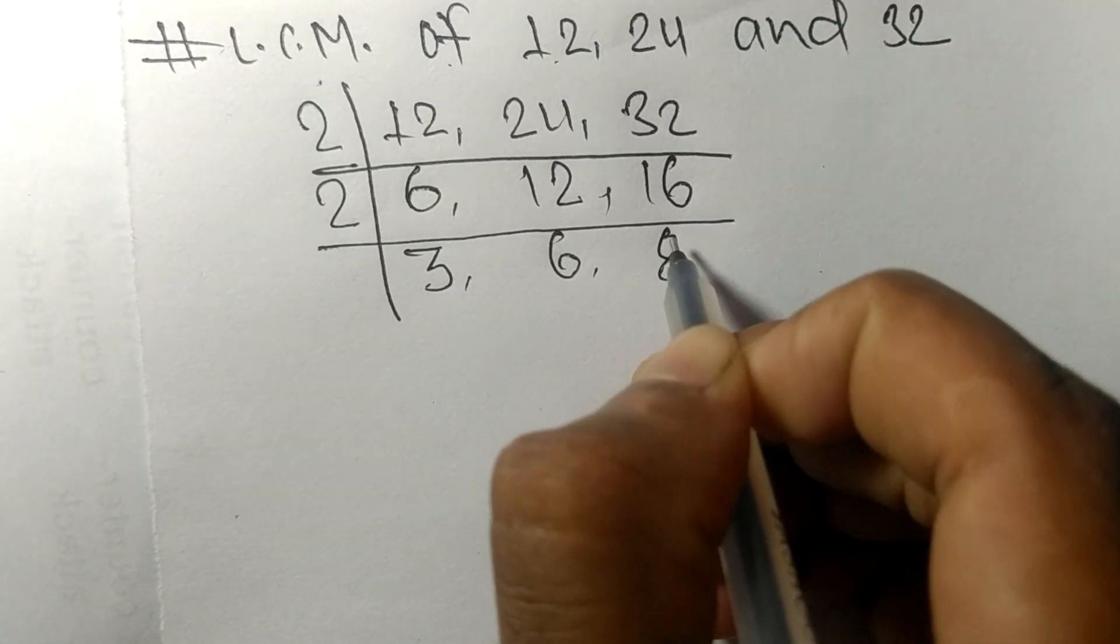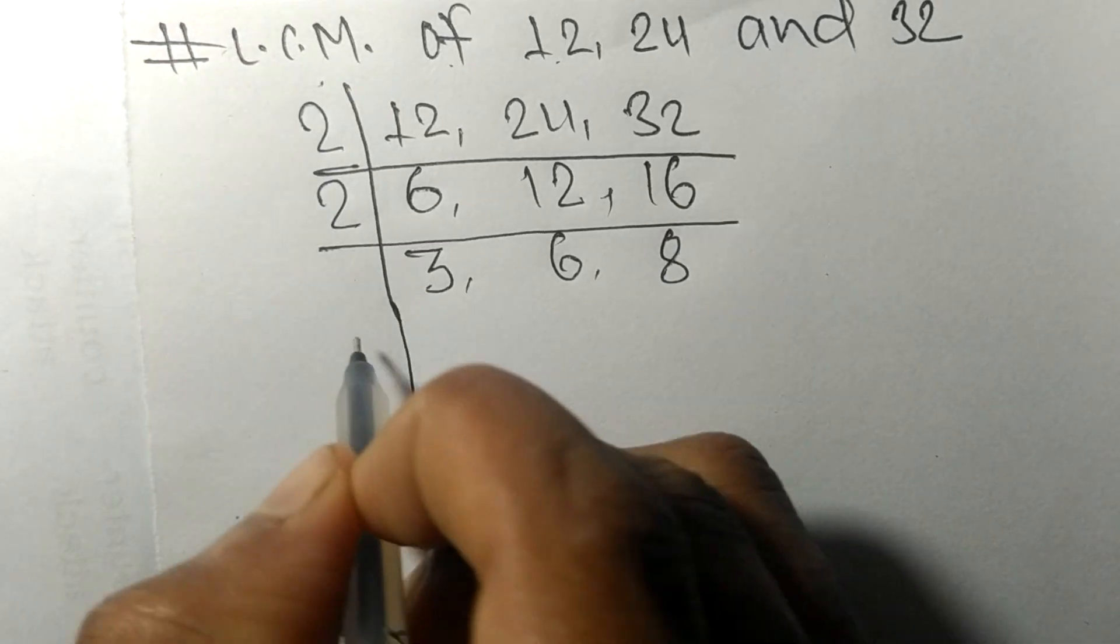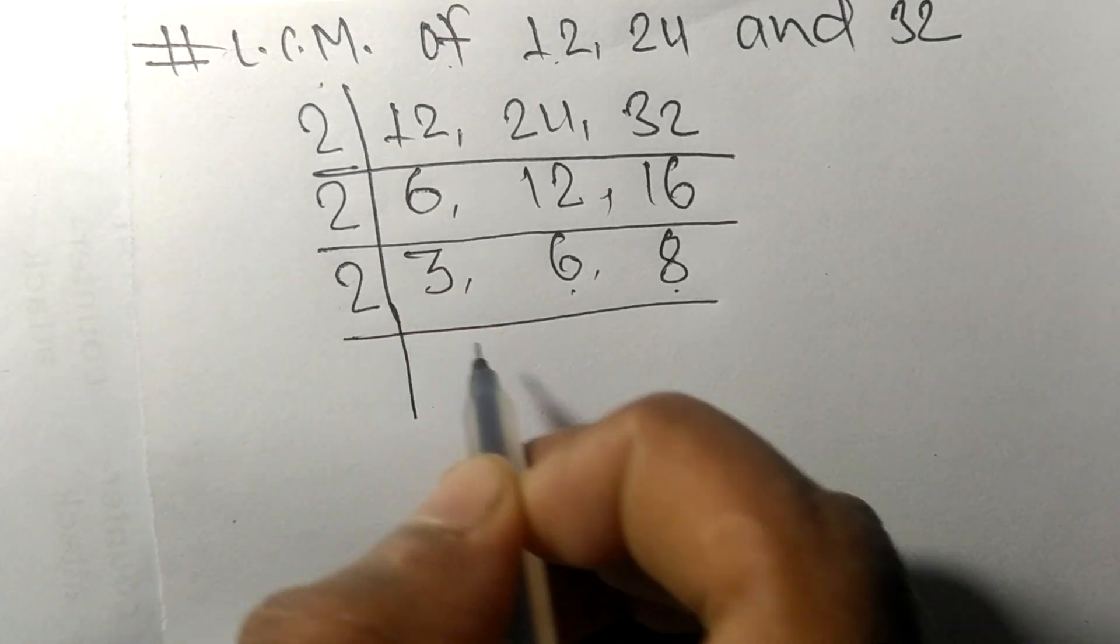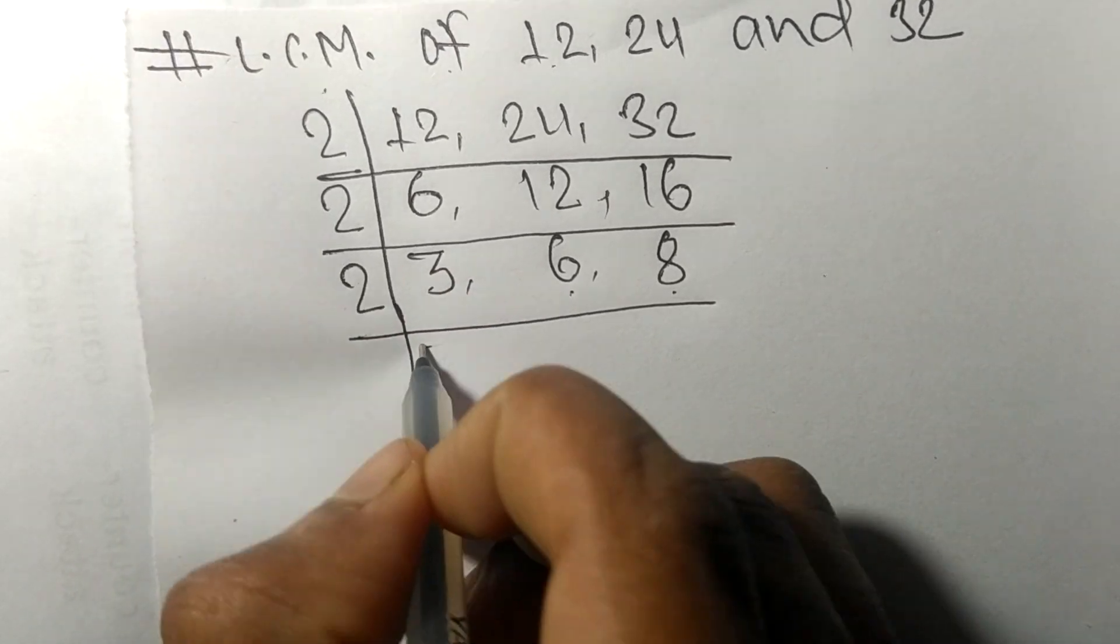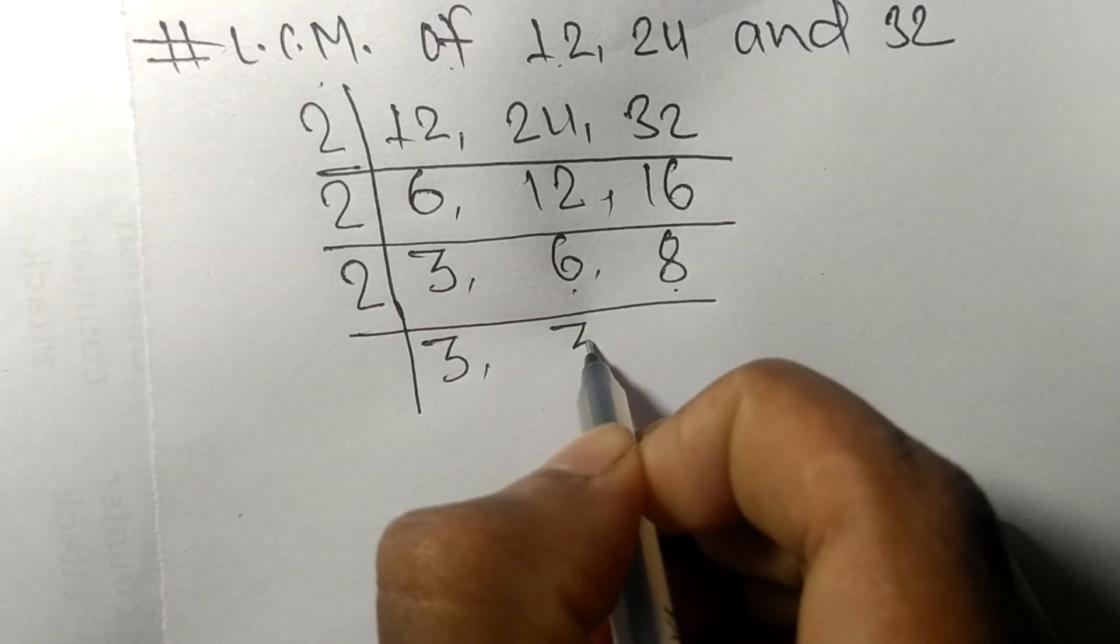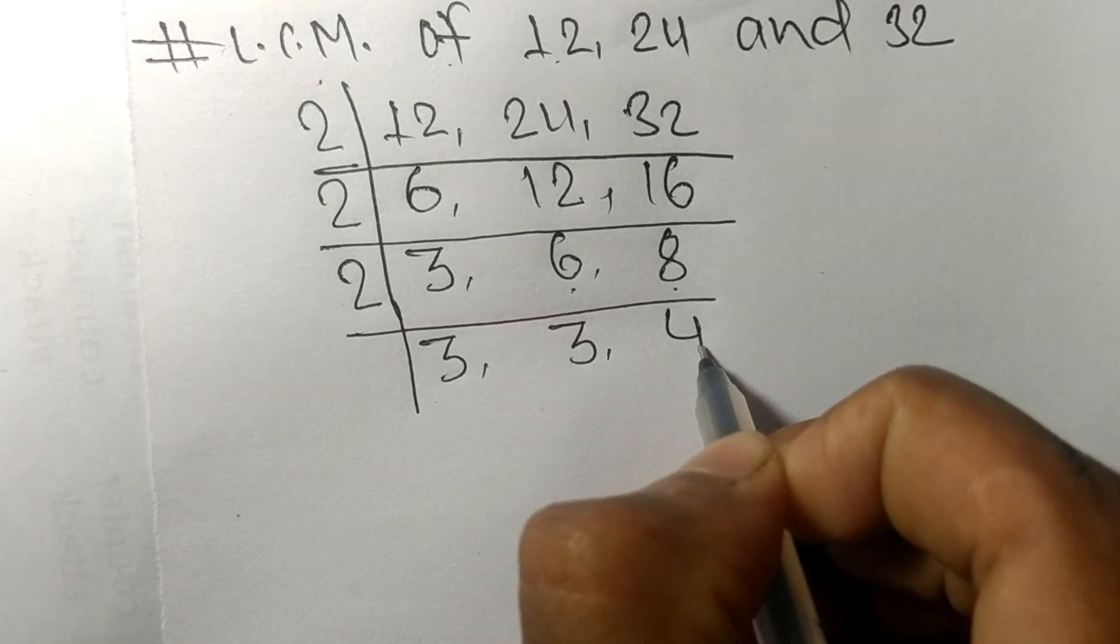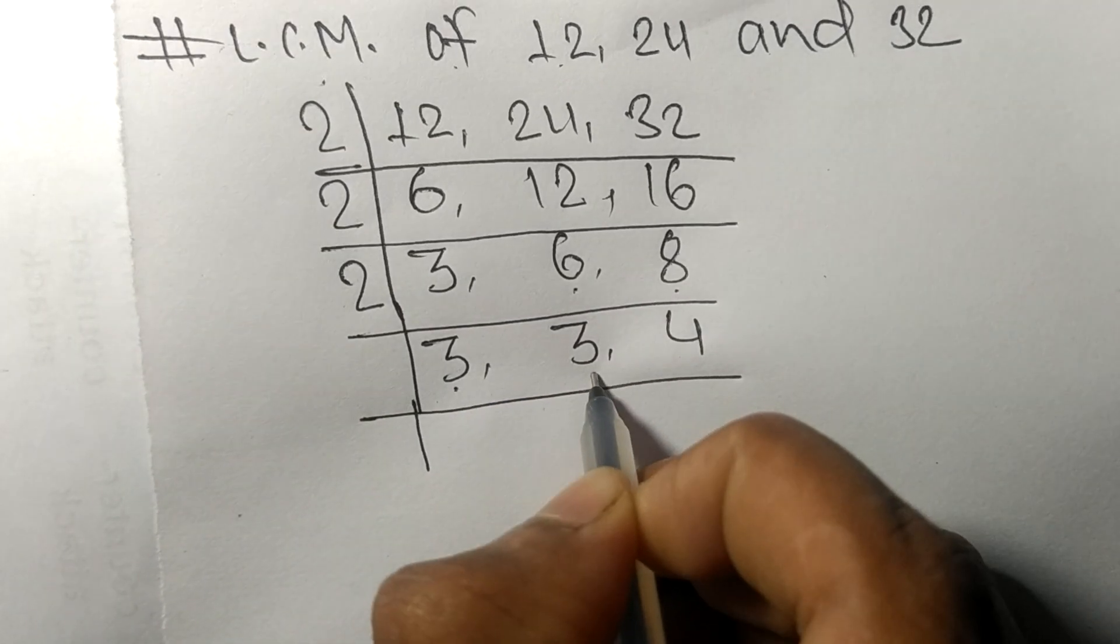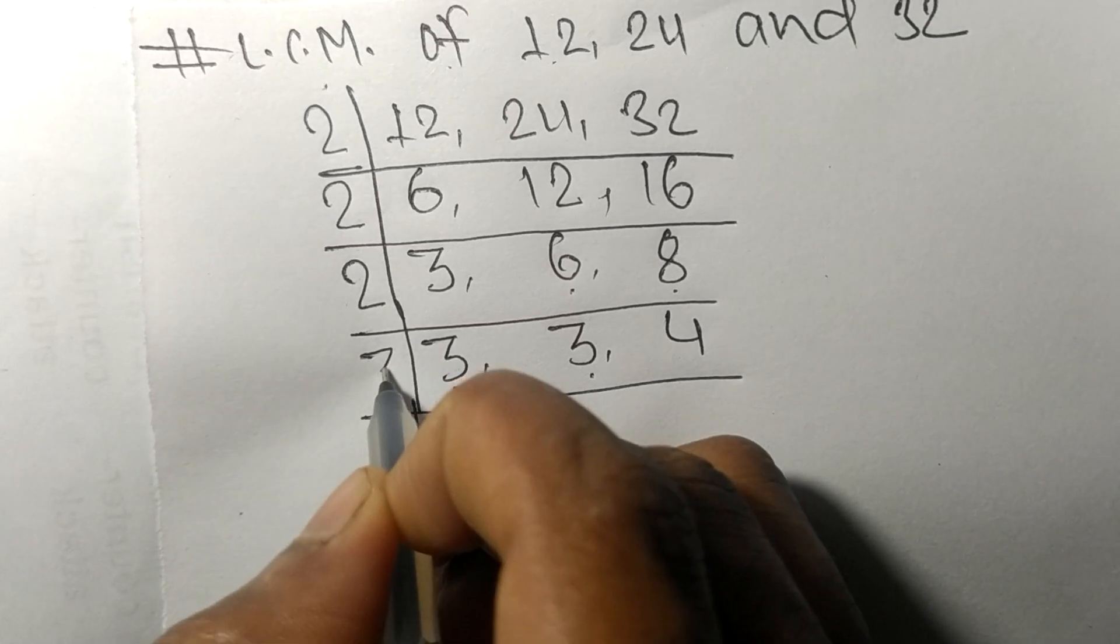So now 6 and 8 are divisible by 2, 3 is not divisible so it stays the same. 2 times 3 equals 6, 2 times 4 equals 8. So now these both 3s are divisible by 3. 3 times 1 equals 3, 3 times 1 equals 3. 4 is not divisible so it stays the same.